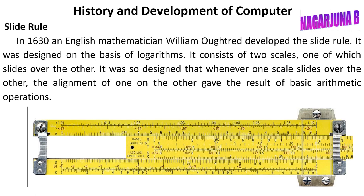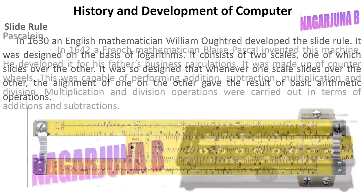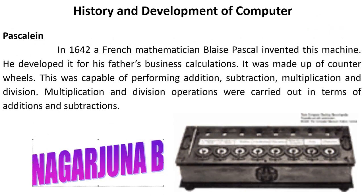The result of basic arithmetic operations — addition, subtraction, multiplication, and division — can be obtained using this slide rule. It was developed by English mathematician William Oughtred in the year 1630.